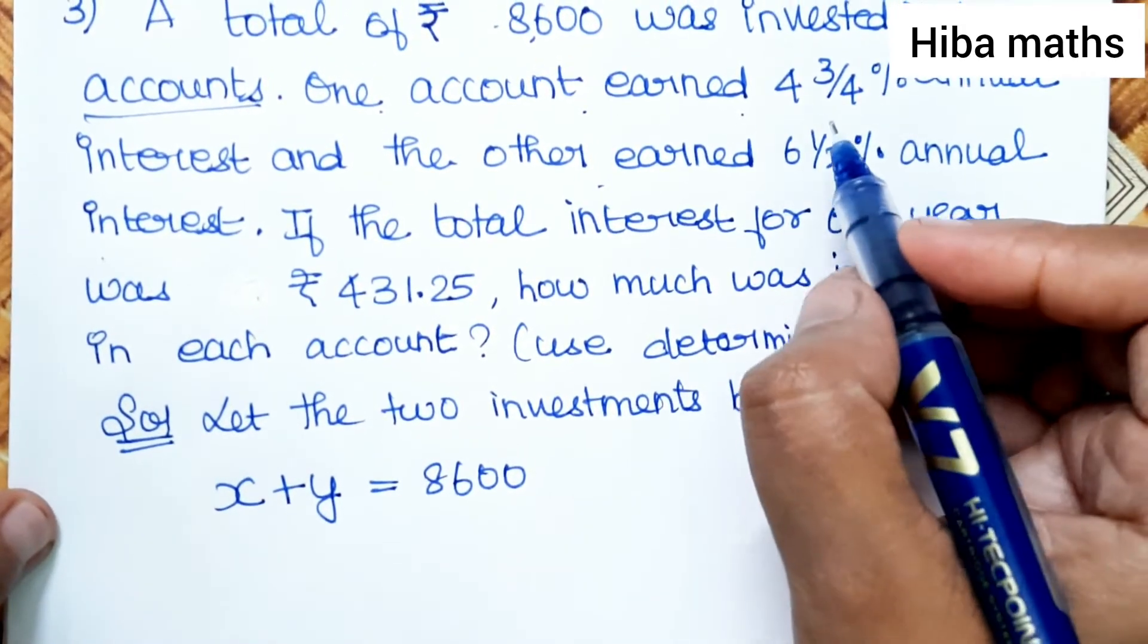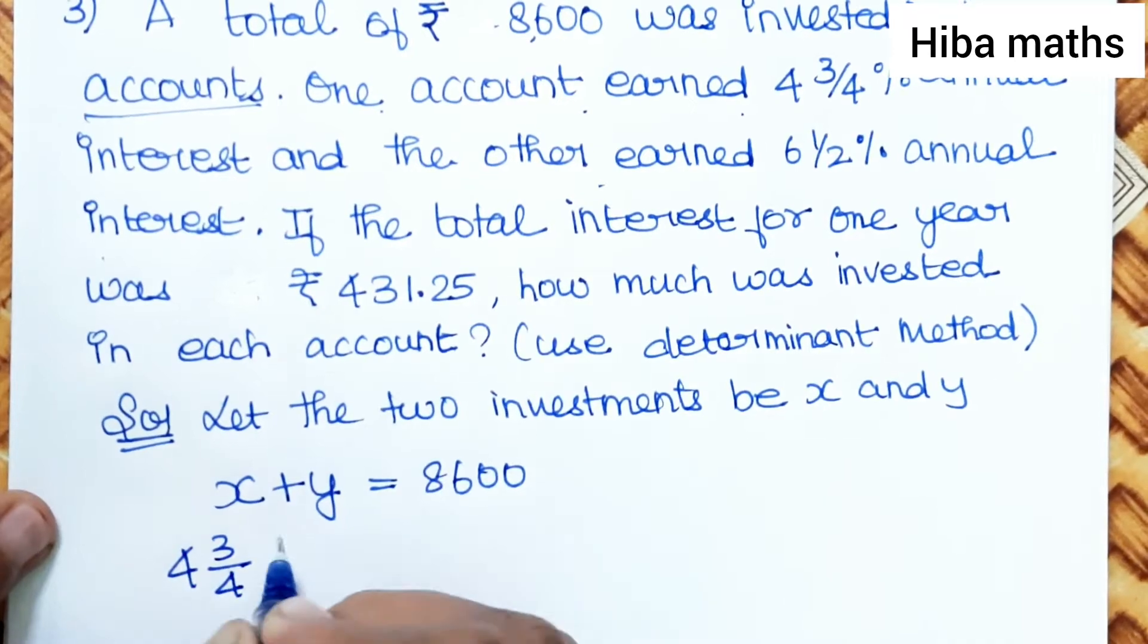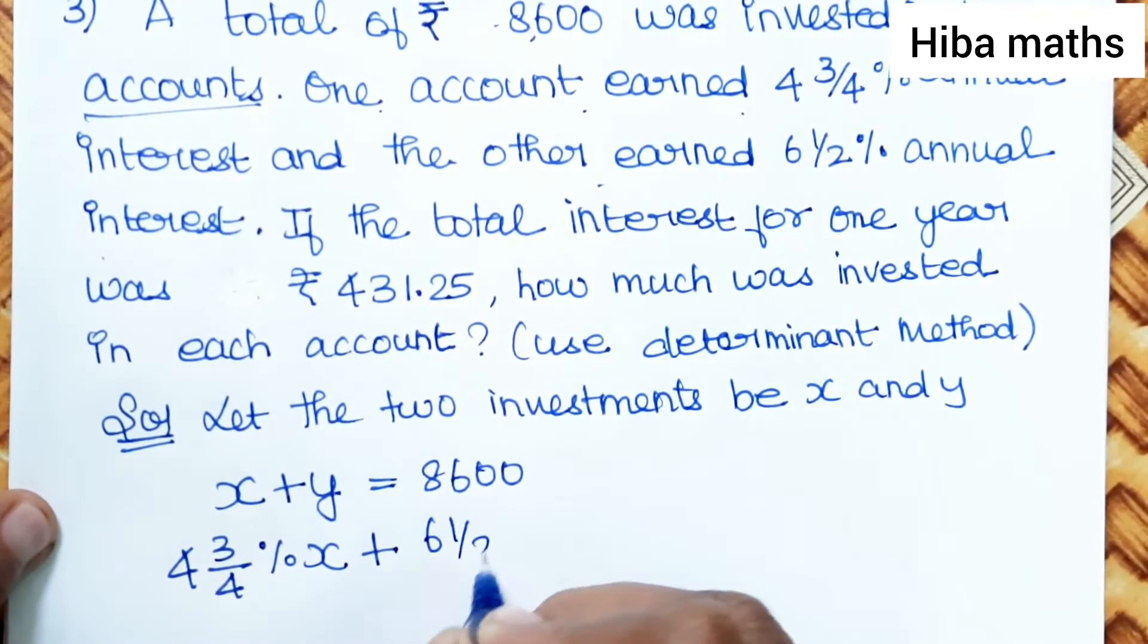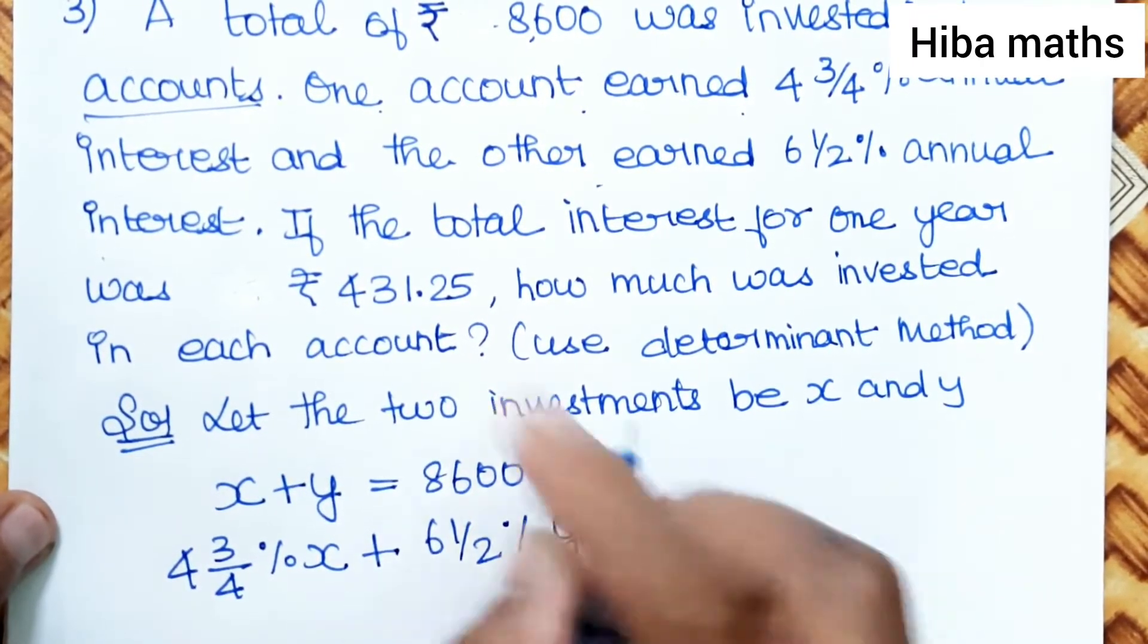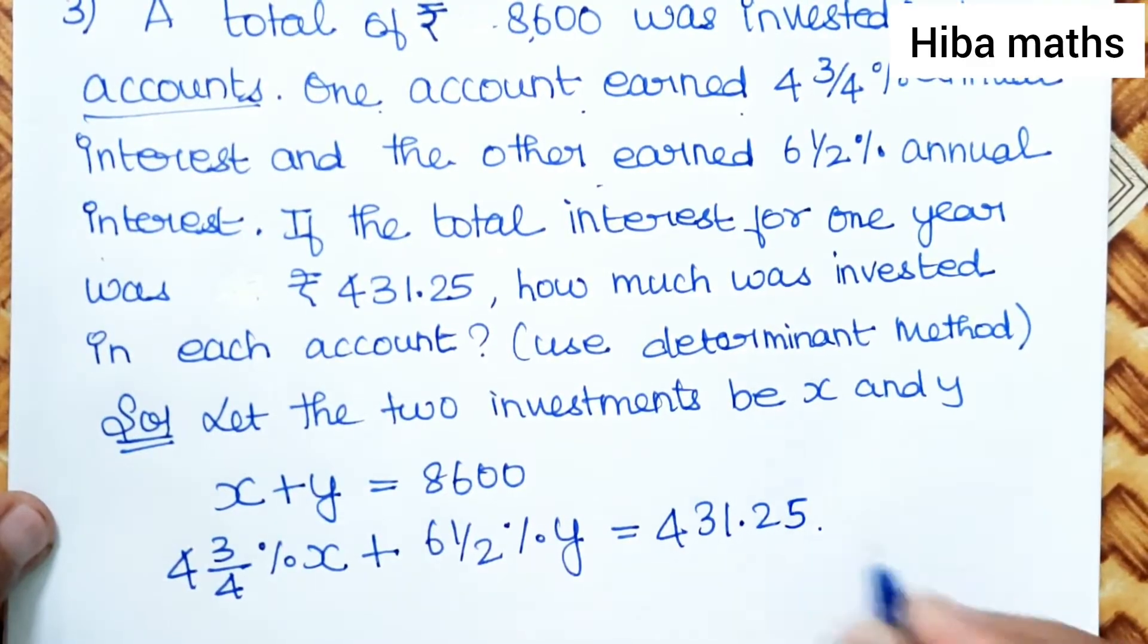Second statement for percentage interest: 4 3/4 percentage of X plus 6 1/2 percentage of Y is equal to 431.25.